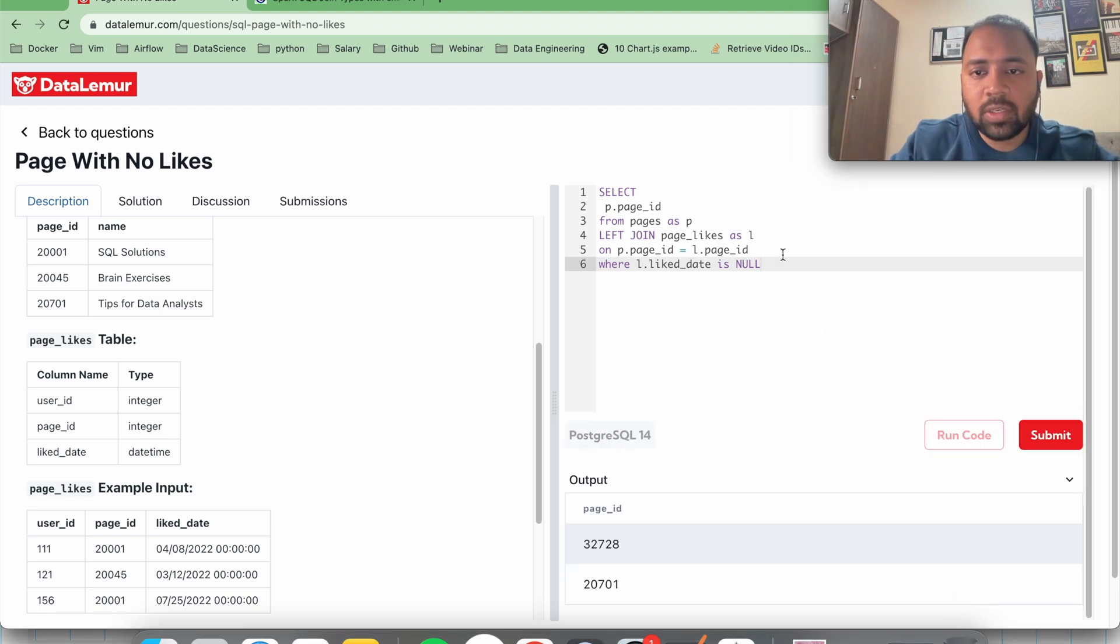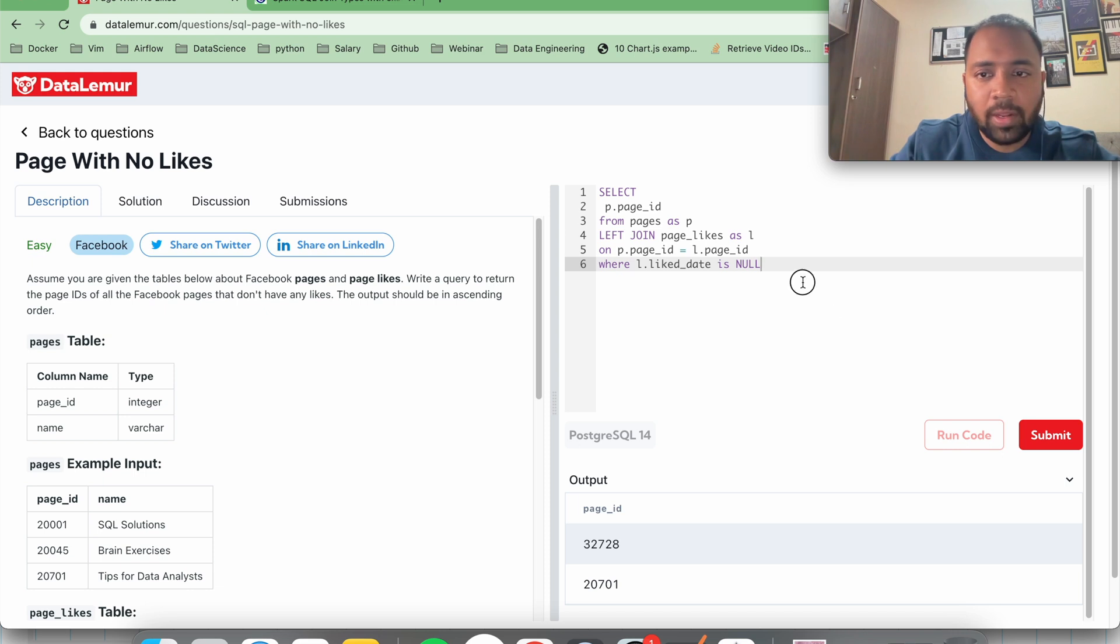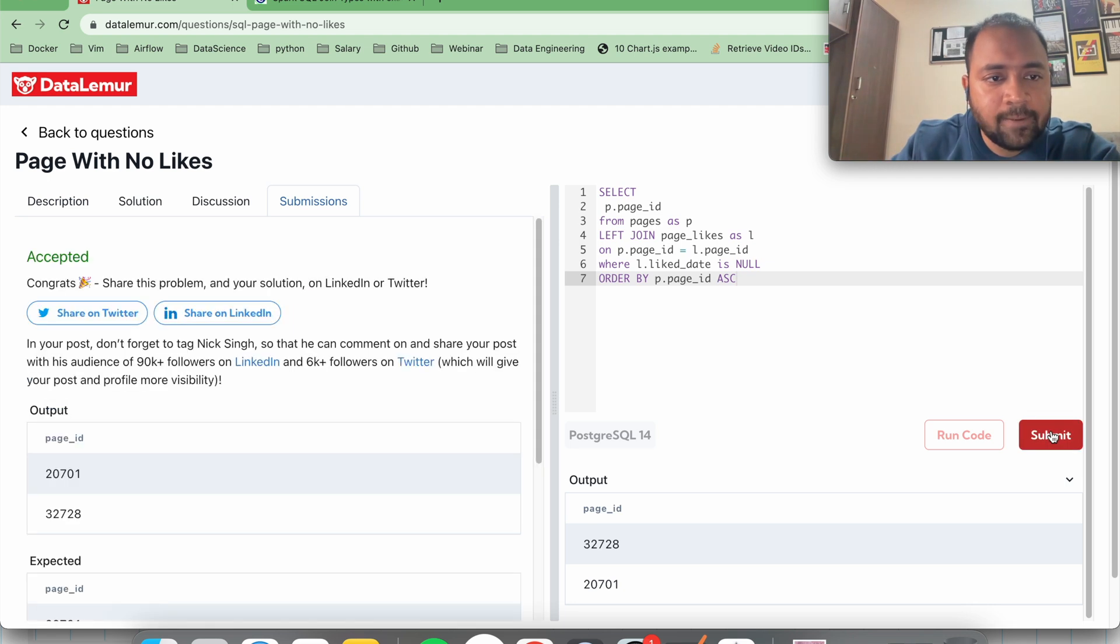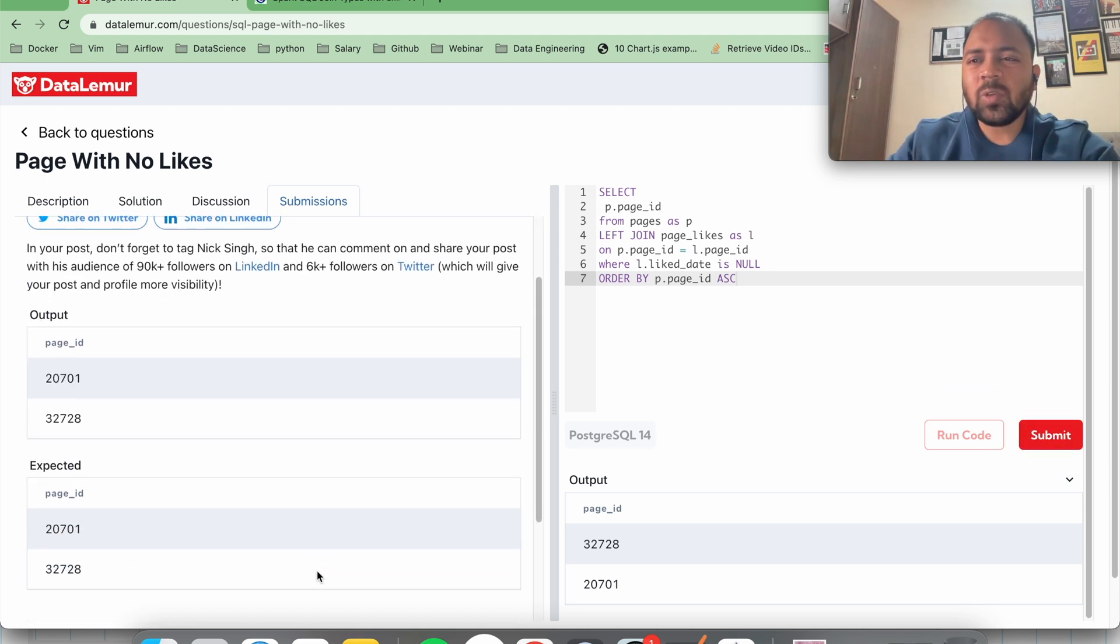Let's try to see if our solution is correct, and we have to also do ORDER BY, right? So let's do ORDER BY p.page_id ascending. Let me just submit it and see. Perfect! This is the solution. This is a very simple problem.